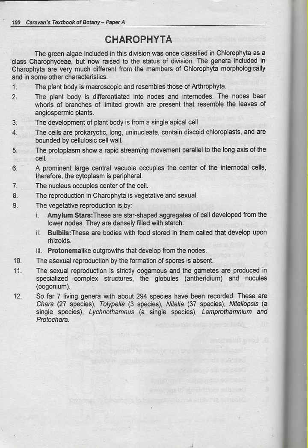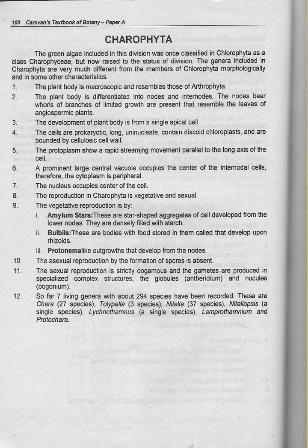Number 1: The plant body is microscopic and resembles those of Arthrophyta. Number 2: The plant body is differentiated into nodes and internodes. The nodes bear whorls of branches of limited growth that resemble the leaves of the angiosperm plants. Number 3: The development of the plant body is from a single apical cell.